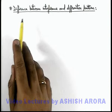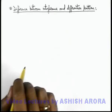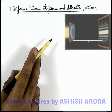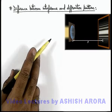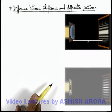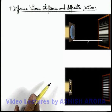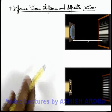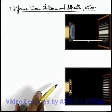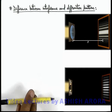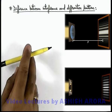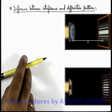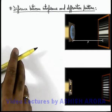Let us now discuss the difference between interference and diffraction pattern. Here you can see, this is the single slit diffraction setup, and this is Young's double slit setup. On both of these, if a monochromatic light beam is allowed to be incident, fringe patterns are obtained. You can see the various fringes obtained on screen, and here also the diffraction pattern is obtained. Both of these we have studied in detail in previous chapters and sections.